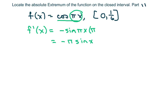Now to find any critical values, you set this to zero. Divide both sides by negative π. That just goes away, and x would be zero, because sine of zero equals zero.